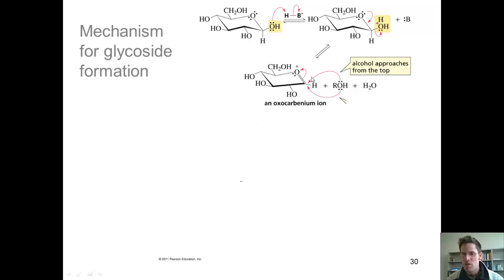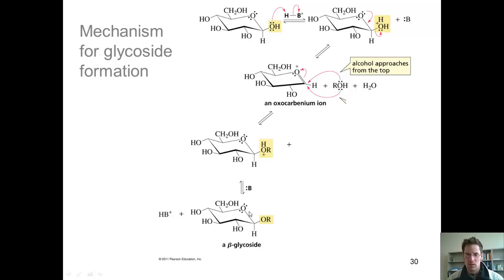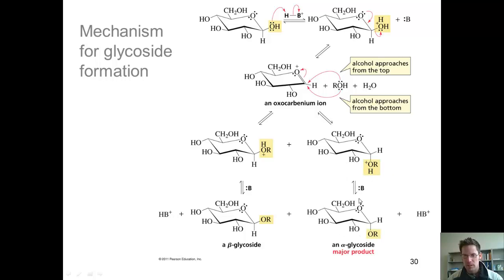Once again, you can imagine this OH can come from either direction, the top or the bottom. If it comes from the top, then it ends up giving us this intermediate. Eventually, that will get deprotonated to give me my beta-glycoside. Once again, the beta anomer is where these two groups are cis to each other. Now, you can just as easily imagine the alcohol coming in from underneath to form a bond. If it comes in from underneath, then we get this isomer, and this isomer will eventually get deprotonated to form this alpha-glycoside.